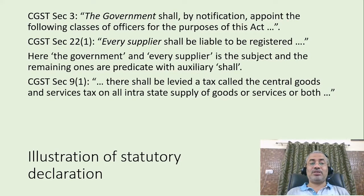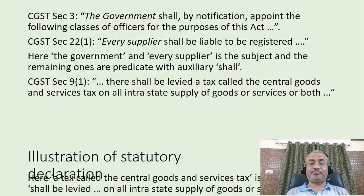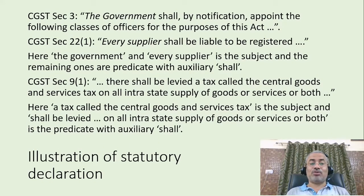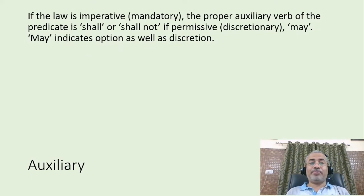Another example: CGST section 9 subsection 1 — there shall be levied a tax called the central goods and service tax on all intrastate supply of goods or services or both. Here, 'a tax called the central goods and service tax' is the subject, and 'shall be levied on all intrastate supply of goods or services or both' is the predicate. If the law is imperative, the proper auxiliary verb of the predicate is 'shall' or 'shall not'.